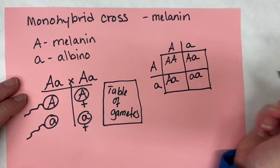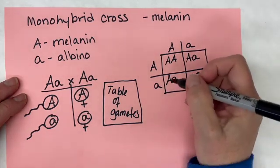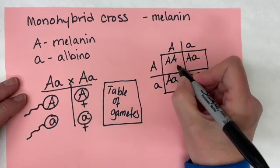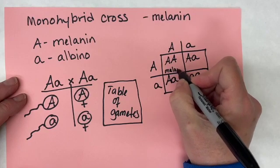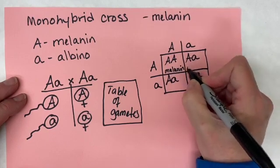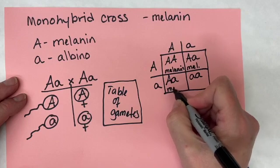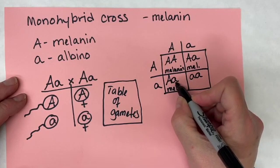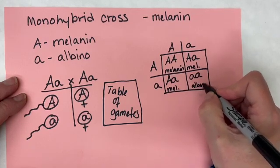There are a couple of approaches to think about the phenotype of each individual. One easy thing is to write inside the box what they look like. This person would have melanin, and so would this one. This one would also have melanin because the big A masks the presence of the little a — so they're showing melanin. But this individual would be albino.